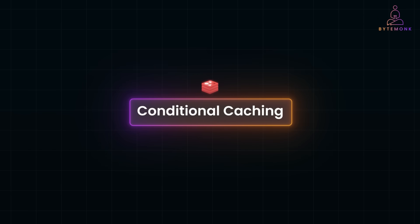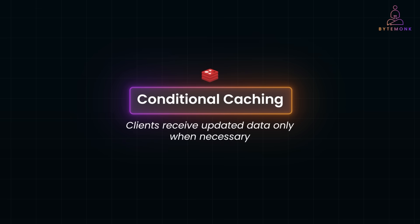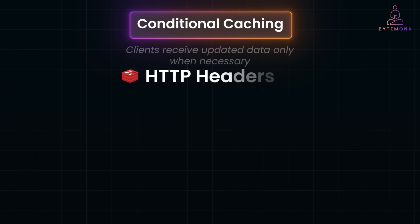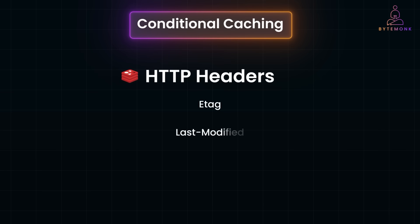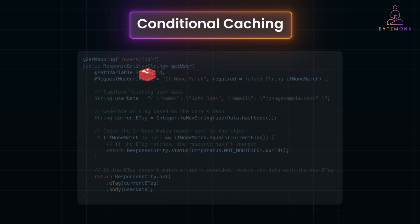What if the client only needs data that has changed since their last request? Conditional caching is a technique that ensures clients receive updated data only when necessary, minimizing redundant data transfers. It's an efficient way to reduce bandwidth usage and improve API responsiveness by leveraging HTTP headers like ETag and Last-Modified. ETag is a unique identifier for a resource version, and Last-Modified is the timestamp of the last update to a resource.